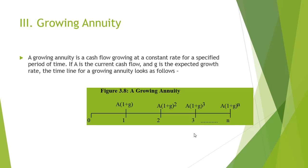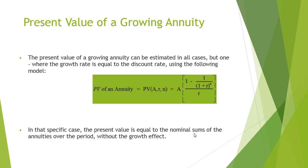Now we are going to discuss the third type of cash flow, which is commonly named as growing annuity. A growing annuity is a cash flow growing at a constant rate for a specified period of time. If A is the current cash flow and g is the expected growth rate, the timeline for a growing annuity looks as follows. Present value of a growing annuity is quite important to evaluate. It can be estimated in all cases but one, where the growth rate is equal to the discount rate using the following model. It must be noted that in that specific case, the present value equals the nominal sums of the annuities over the period without the growth effect.